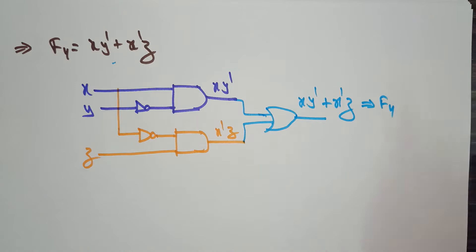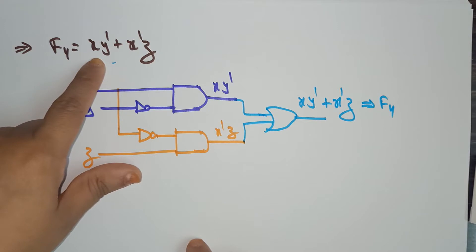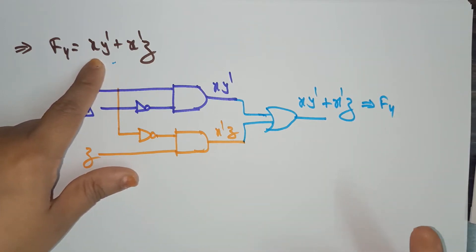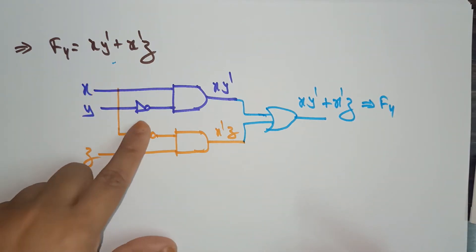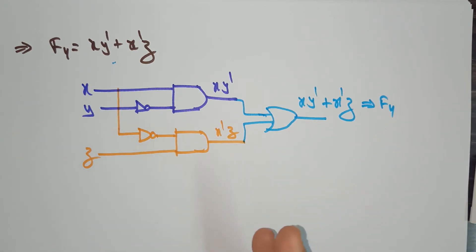This is the way to convert boolean functions into logic diagrams. The variables in boolean functions can be in complement form or non-complement form. Whenever the complement is there, just add the NOT gate; if no complement, just use a single line. We use AND gates, OR gates, NOR gates, and XNOR gates for constructing the logical diagram. Whatever expression is given, you can easily convert it into a logical diagram. Thank you.